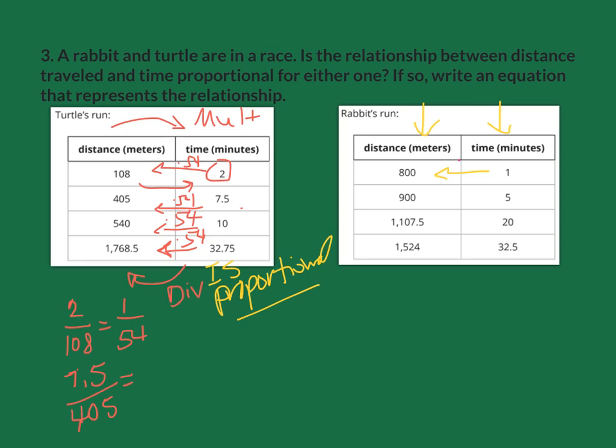5 times 800, you can already see where this is going. This is not going to work out, because 900 divided by 5 is 180. So I'm multiplying by 180. Already, we can tell this is not a proportional relationship.